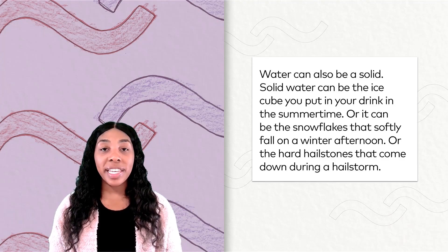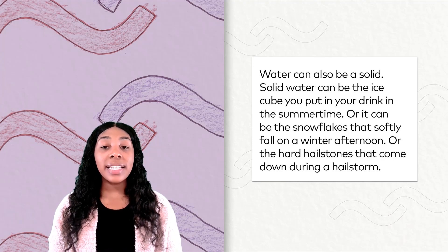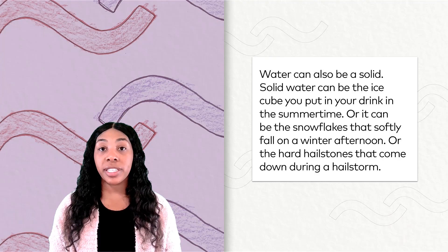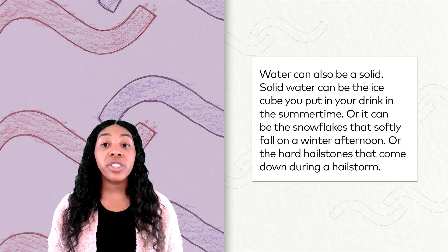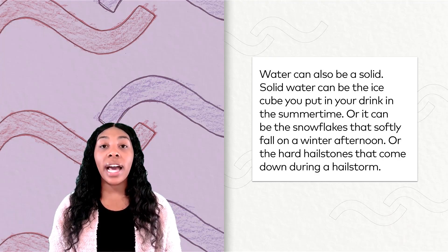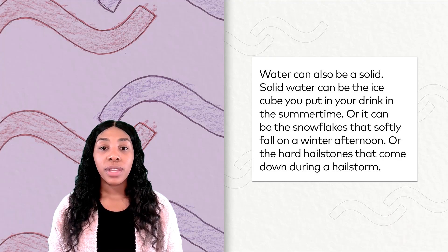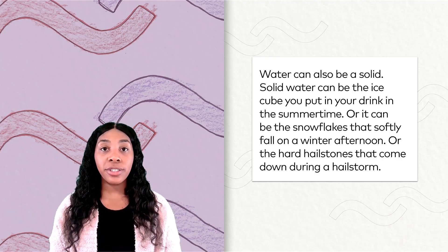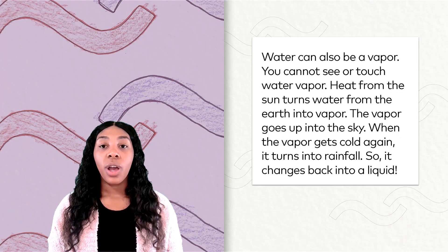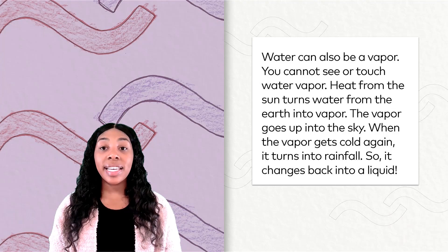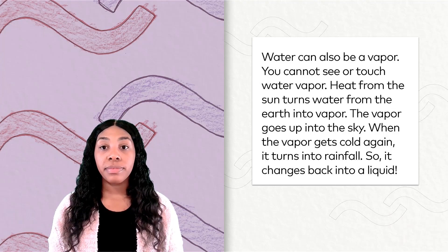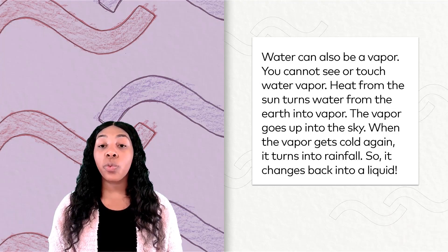Water can also be a solid. Solid water can be the ice cube you put in your drink in the summertime, or the snowflakes that softly fall on a winter afternoon, or the hard hailstones that come down during a hailstorm. Water can also be a vapor. You cannot see or touch water vapor.